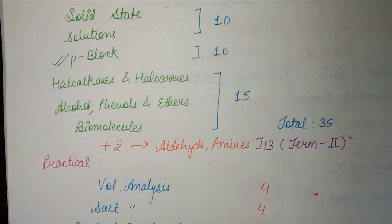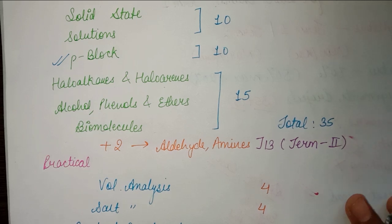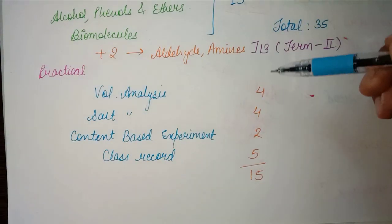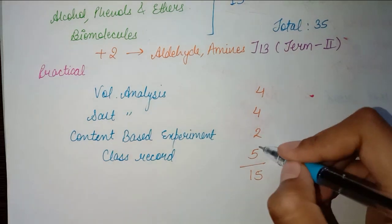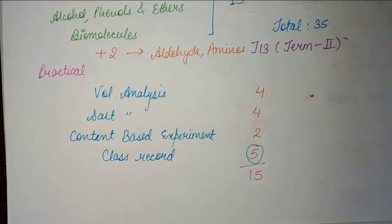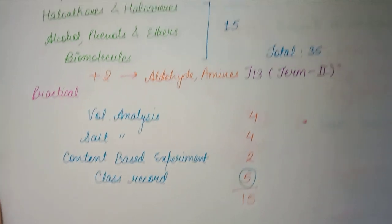Also practice assertion-reasoning questions and understand what types of questions are coming. Total for the theory paper is 35 marks and the practical is 15 marks. In the practical, your class record carries 5 marks — this is very important, so maintain all your records properly and maintain a good relationship with your teacher, because they are the ones giving you marks in practical.